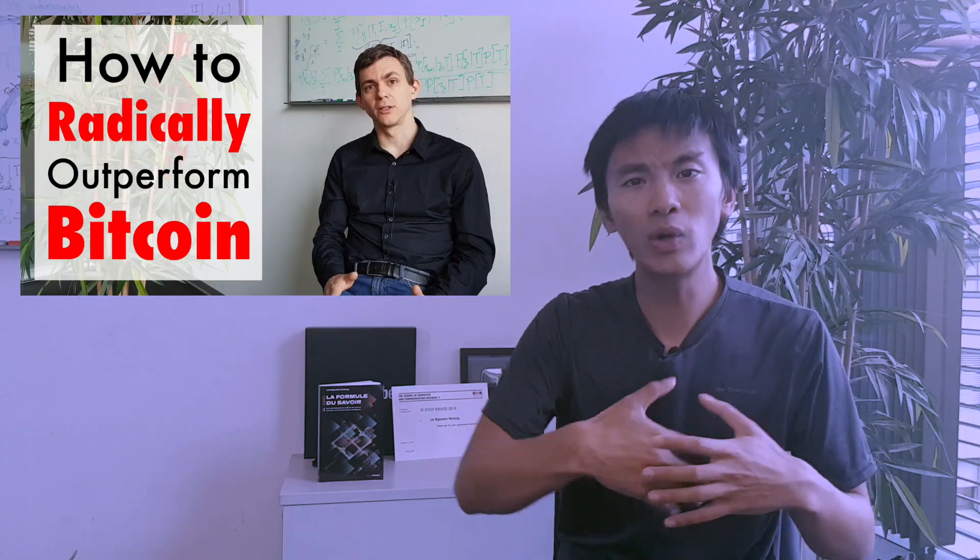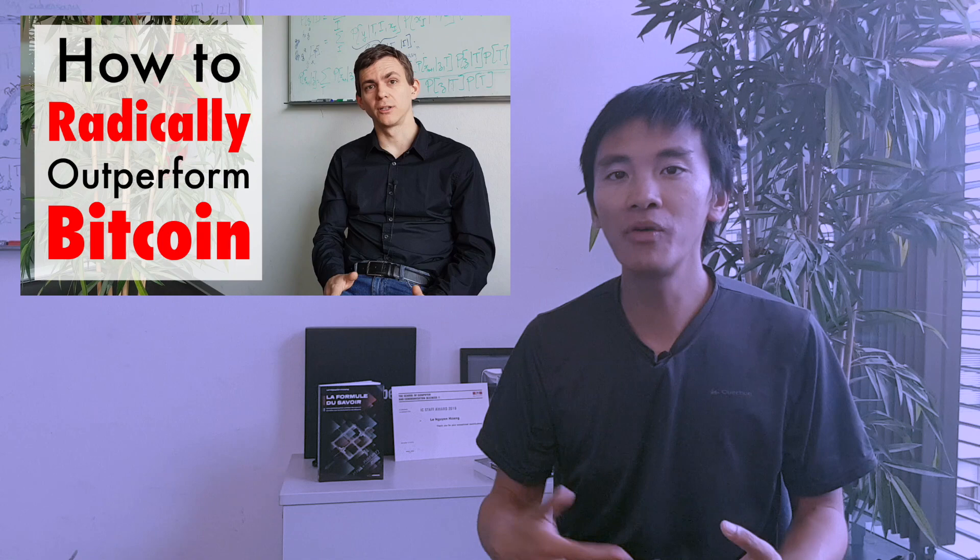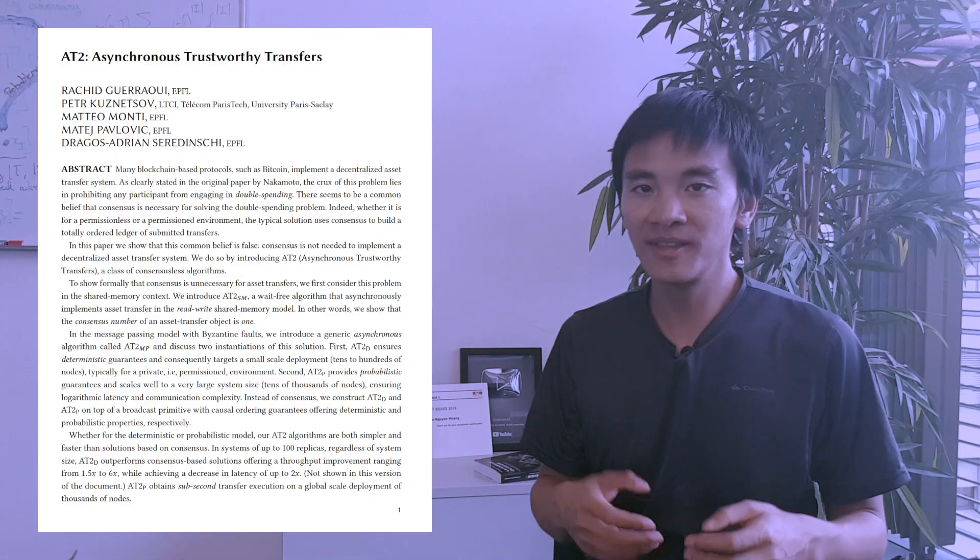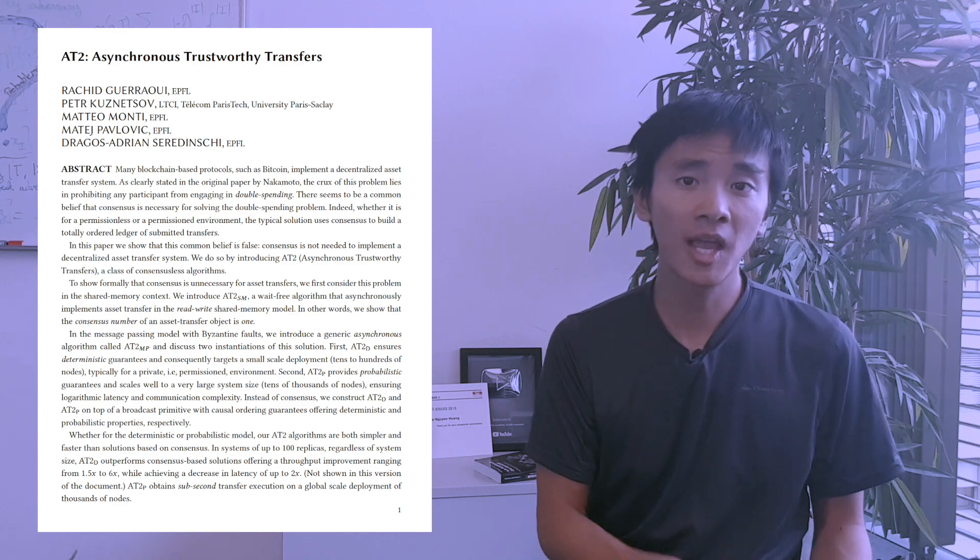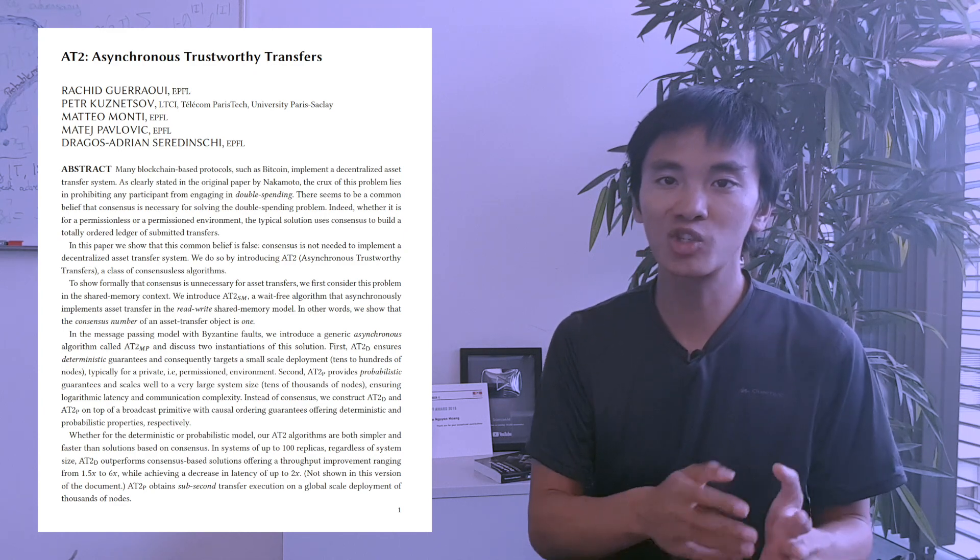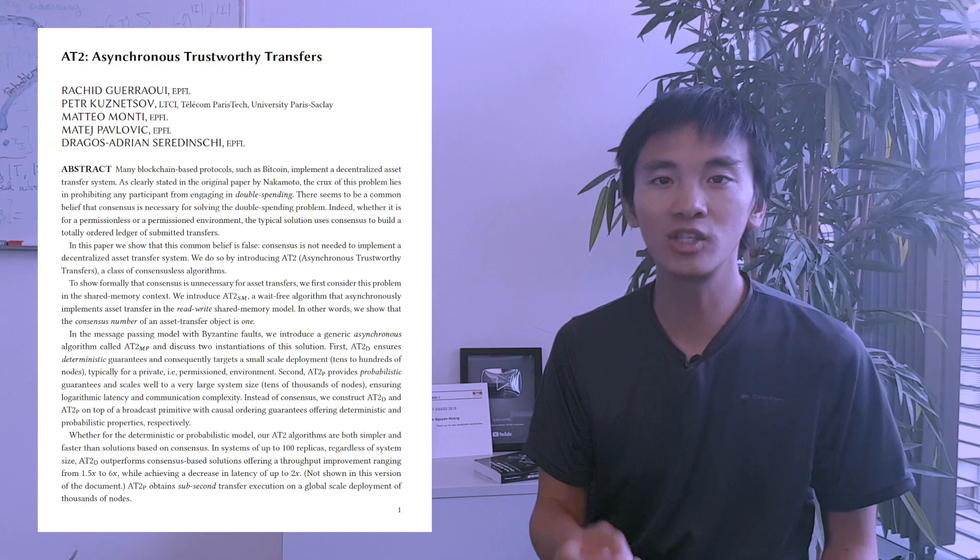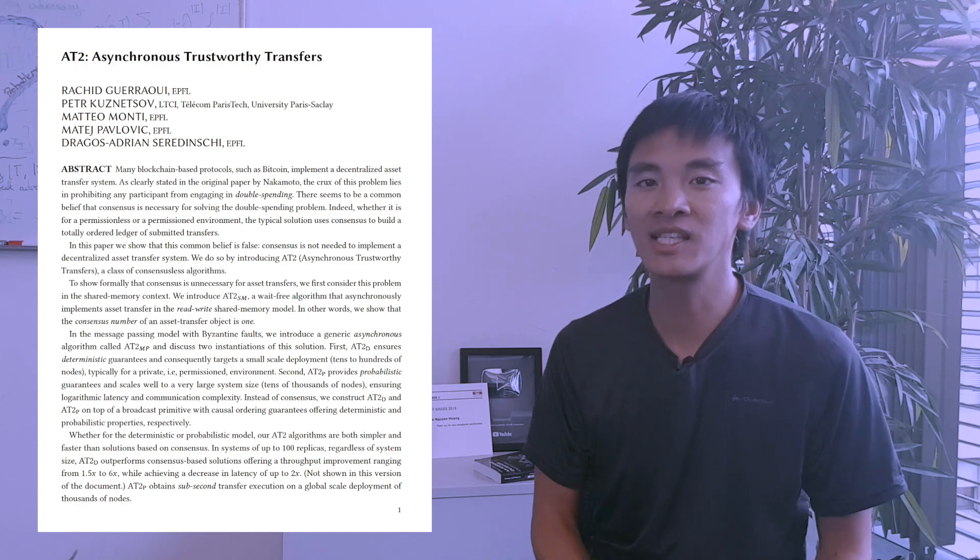We also saw how to radically outperform Bitcoin, both in a setting with a limited number of users with deterministic safety guarantees and in a very large-scale setting with very high probability guarantees. These more efficient alternative solutions have been dubbed asynchronous trustworthy transfer or AT2 by Professor Ghirawi and his collaborators.